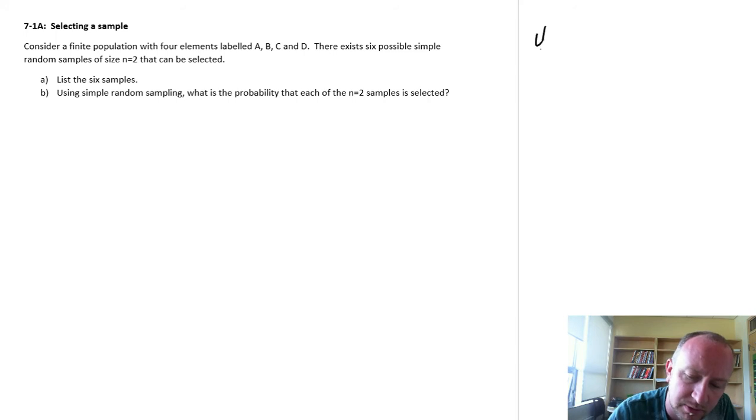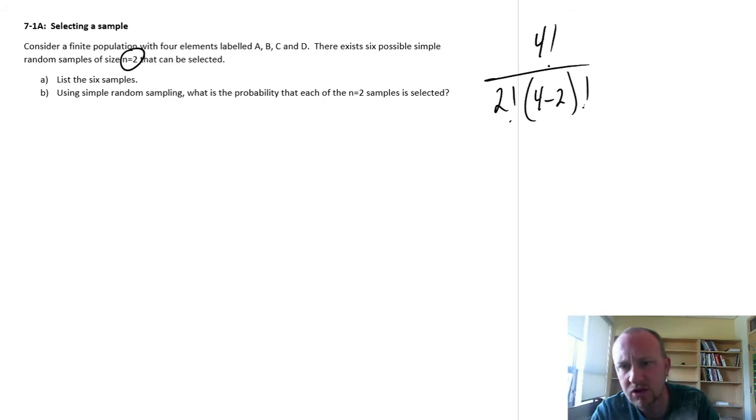So if I have four elements in the population, sample size of two, so I'm going to choose two, and this would be four minus two factorial. So we've done these types of exercises before, and so here you can solve this on your calculator. You'll find there's six possible combinations.